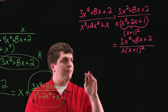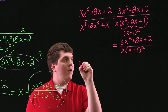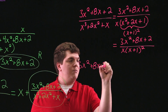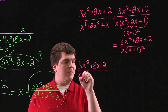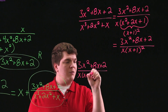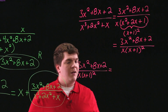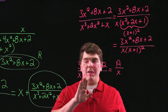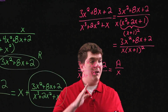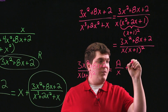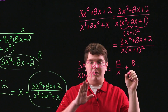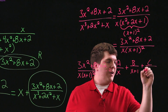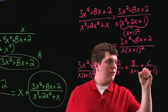Now that we have our denominator completely factored we can begin our partial fractions decomposition. So we want to write 3x squared plus 8x plus 2 all divided by x times x plus 1 quantity squared as A divided by x, and since x plus 1 is a linear term that is repeated we write plus B divided by x plus 1 plus C divided by x plus 1 quantity squared.